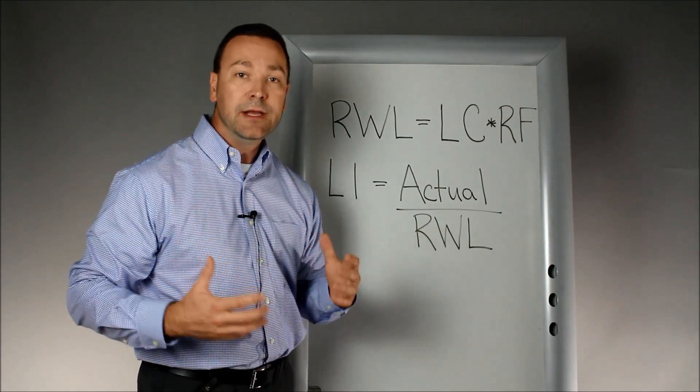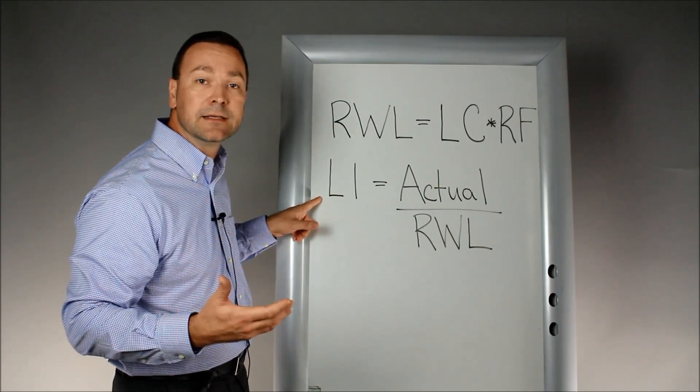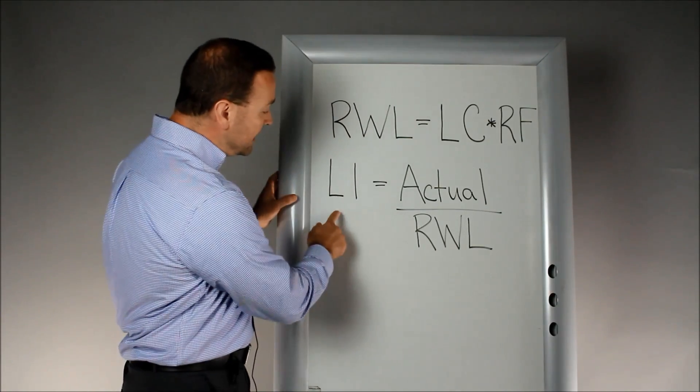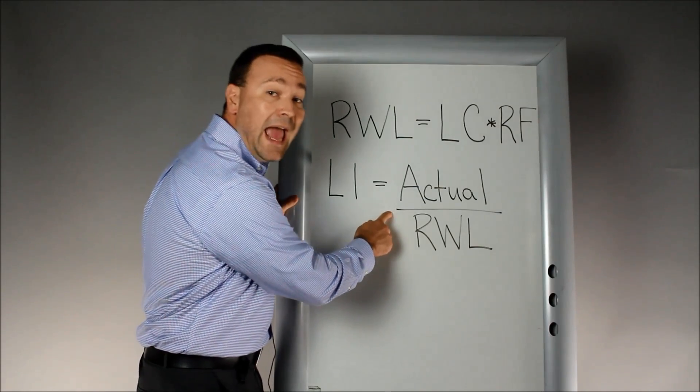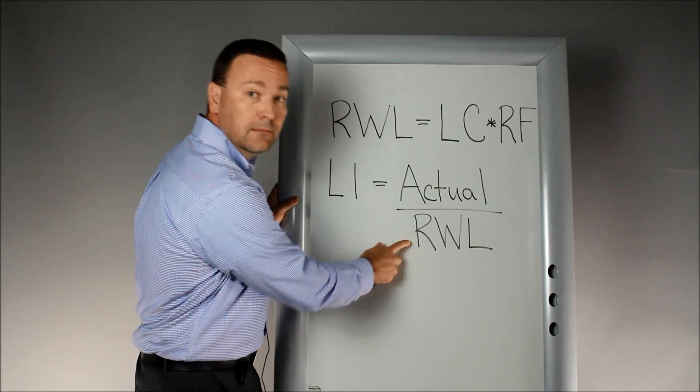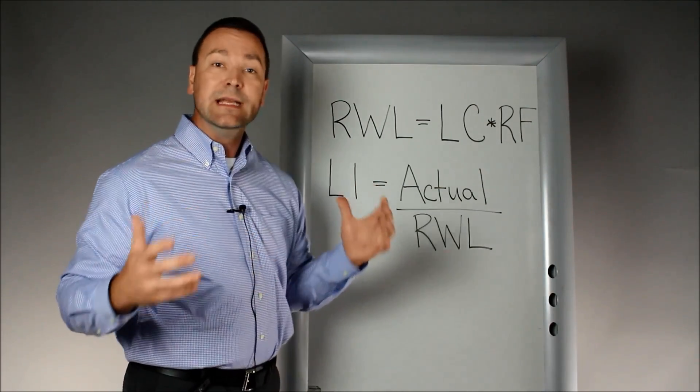Once we calculate the recommended weight limit, we're then able to determine what's called the lifting index. The lifting index tells us what we need to do. The lifting index is calculated by dividing the actual weight of that lift by the recommended weight limit. Pretty simple. Once we determine the lifting index, we know what is next.